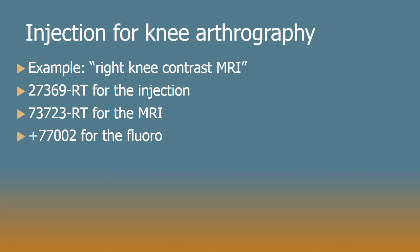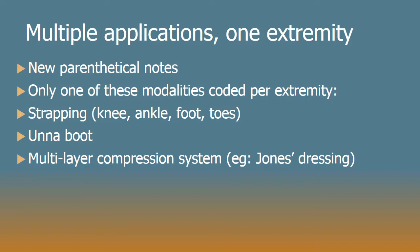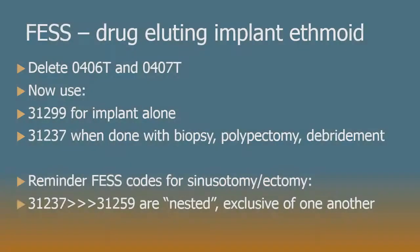There are new parenthetical notes related to multiple applications of external dressings and strapping for one extremity: only one modality per extremity may be coded. So strapping, Unna boot, or multi-layer compression systems like a Jones dressing — if multiple versions are applied to the same extremity, pick the modality with the highest work RVU for that extremity and code it once.